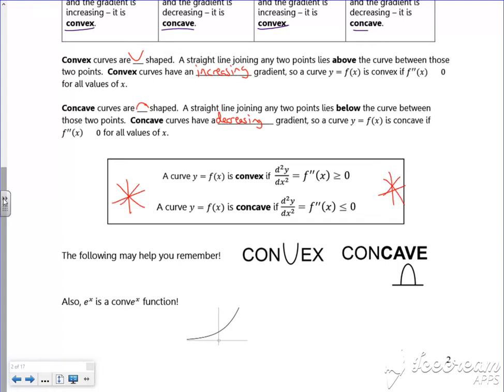Convex, the second differential is greater than or equal to zero. Now there's an argument for it just being greater than or less than, but our exam board makes us put the equals in there.